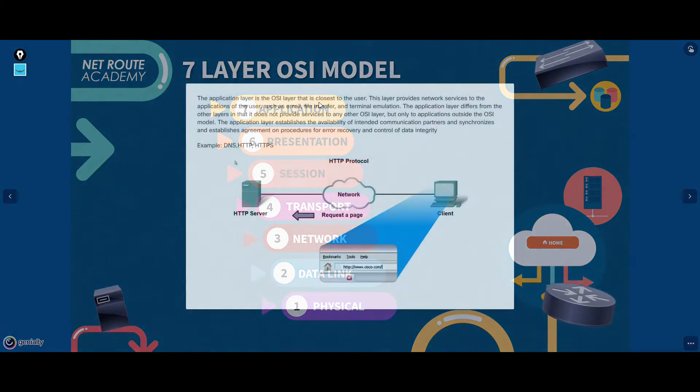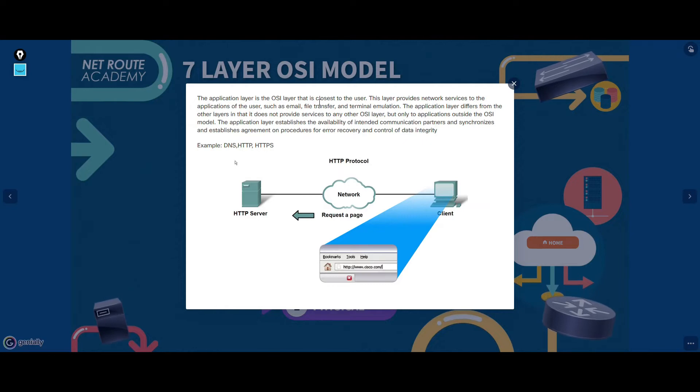The application layer in the OSI model does not contain applications themselves, such as web browser, but instead it describes the interface between two applications.